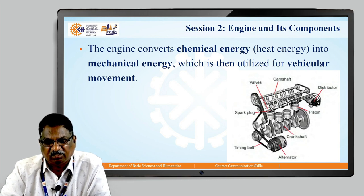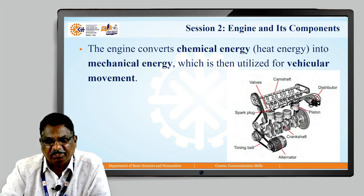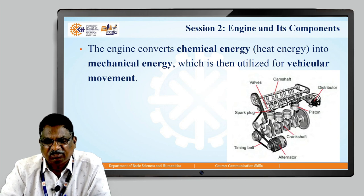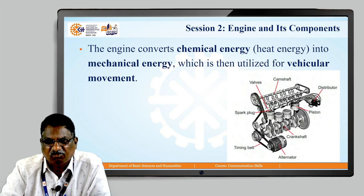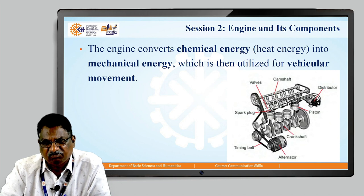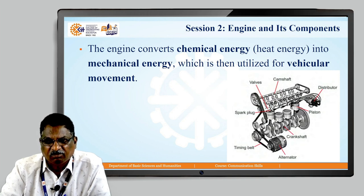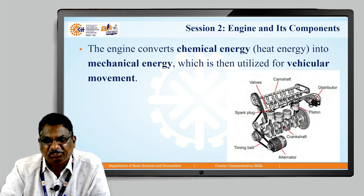Engine and its components: the engine, as shown in the figure, converts chemical energy into mechanical energy, which is then utilized for vehicular movement. The engine consists of crankshaft, camshaft, and piston. The piston moves in an upward and downward direction and is converted into rotary motion with the help of the crankshaft. There is also an alternator and spark plug — these are the main engine components.